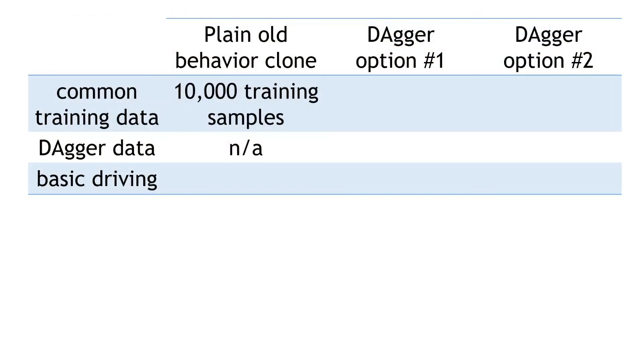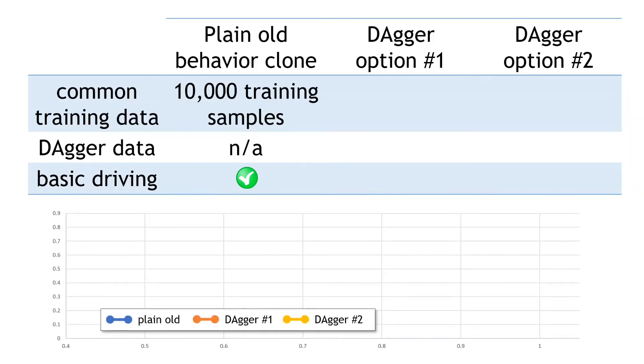Now, back to the data table. In terms of basic driving, the policy definitely passes OK. Now let's average the reward data for the drive and look at the reward versus speed curve. This forms our performance baseline.